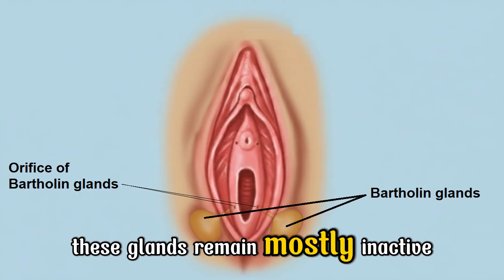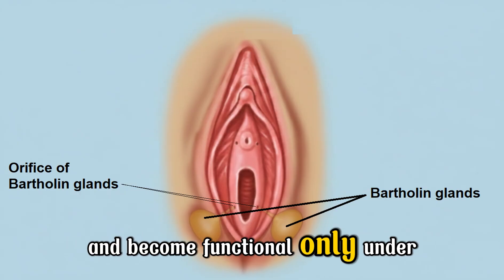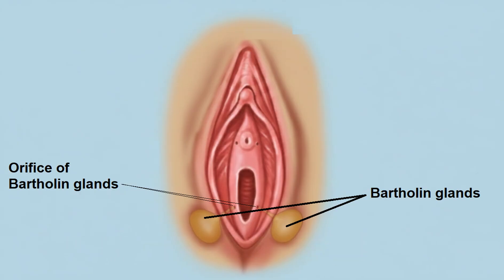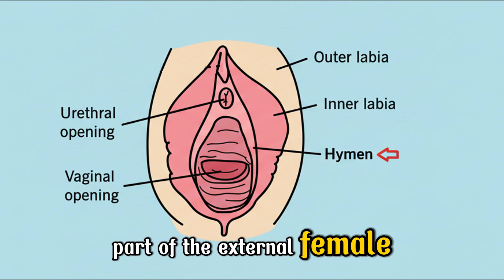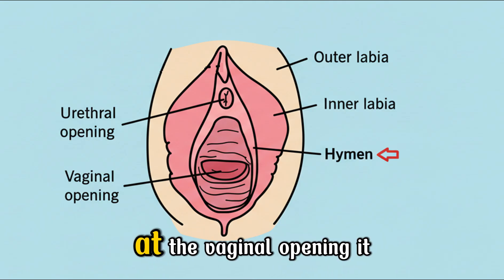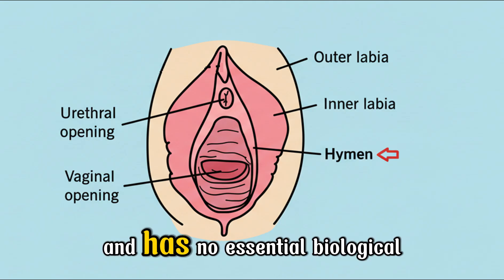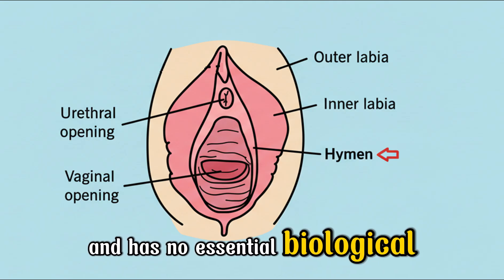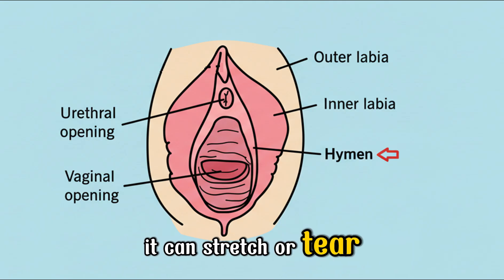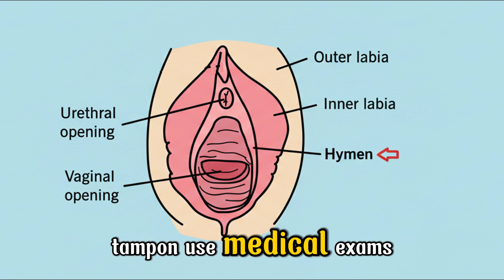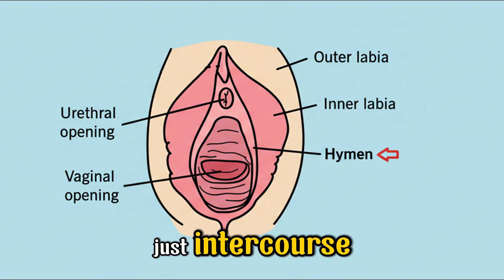These glands remain mostly inactive until puberty and become functional only under hormonal influence. The hymen is a thin membranous part of the external female genitalia at the vaginal opening. It is made of elastic connective tissue and has no essential biological function. It can stretch or tear due to exercise, tampon use, medical exams, or other physical activities — not just intercourse.